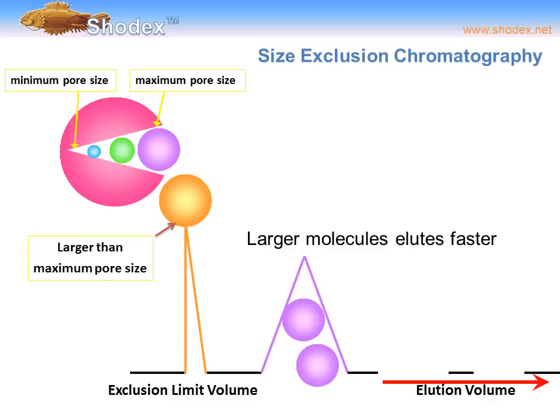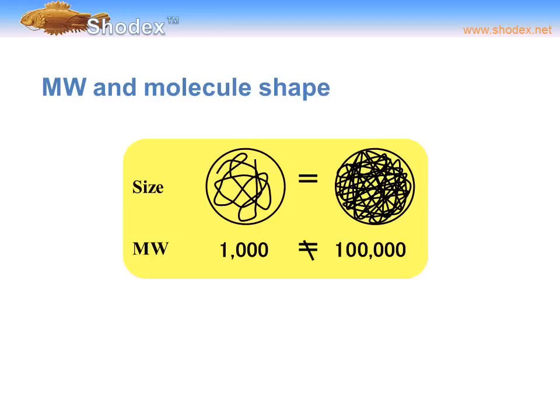In a size exclusion chromatogram, the larger size particles elute faster than the smaller ones. In size exclusion chromatography, the retention time depends on the volume and not the molecular weight. However, we must be careful because of folding patterns and solvent influences — the volume that a compound resides in may be different and may not correlate directly with molecular weight.